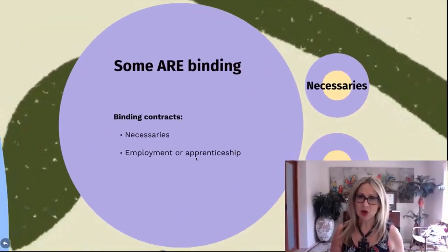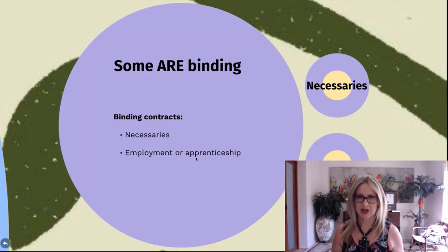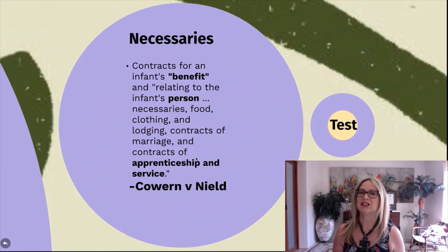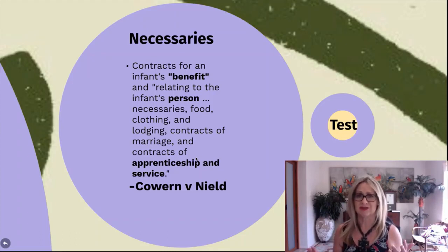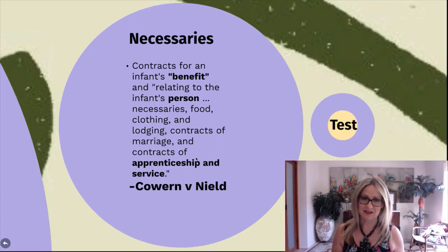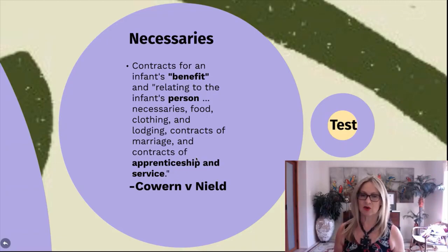Some contracts will just be binding across the board, and these are very narrow circumstances. They are contracts for necessaries and contracts for employment or apprenticeship. A minor is obviously going to be able to make a contract to purchase food — they've got to live somehow. So contracts for an infant's benefit relating to their person — necessaries like food, clothing, lodging — contracts of marriage, and contracts of apprenticeship or service were all mentioned in the case of Cohen v Neal.